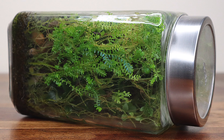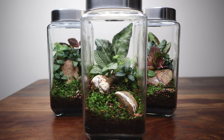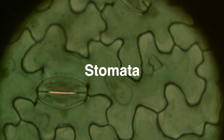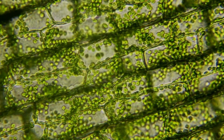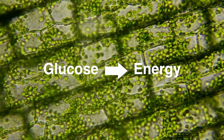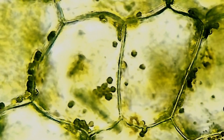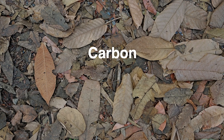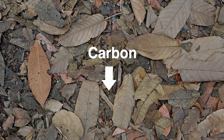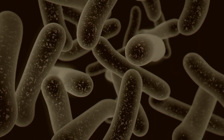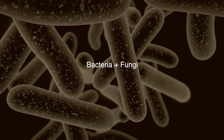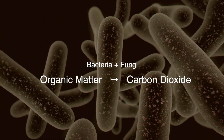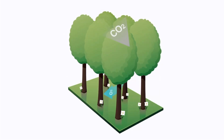Let us start with how carbon enters the terrarium in the first place. Carbon dioxide is present in the air and is taken up by the plants inside the terrarium through tiny openings on their leaves called stomata. Inside the plant, the carbon is used for photosynthesis to create glucose, which is used for energy and growth. As the plants grow old and develop, they store carbon in their tissues. When the plants die or shed leaves, the carbon in their tissues is released back into the soil through the process of decomposition. In the soil, microorganisms such as bacteria and fungi break down the organic matter and release carbon back into the air as carbon dioxide, which is then taken up by the plants again, restarting the cycle.